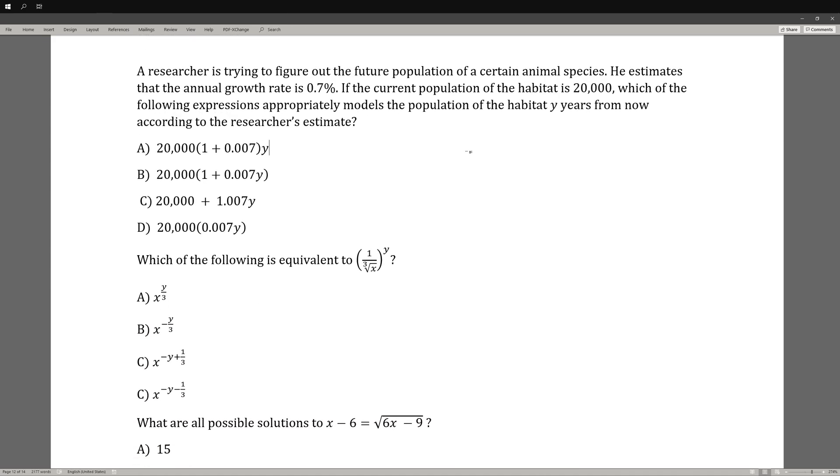A researcher is trying to figure out the future population of a certain animal species. He estimates that the annual growth rate is 0.7%, and if the current population of the habitat is 20,000, which of the following expressions appropriately models the population of the habitat y years from now? This is going to deal with coming up with your own function in order to express the scenario. We need to find the number of years, which is going to be represented by y, and we need to find a rate. If the growth rate, note that it says growth instead of decay, so growth is going to be any value that's greater than 1, and we just convert this into a decimal. In order to convert into a decimal, we move this to the left two times. So we have 1.07, and another movement to the left would give us 0.007 for our growth rate. So our growth rate will be 0.007, and our rate will be 1 + 0.007.